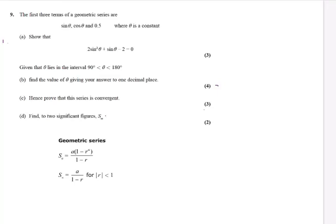Hi, so on the advanced information it says for paper two there is a geometric sequence and with it it says trig identities. So I found this question from an old international A-level paper, so let's have a look at it. It could be something like this.